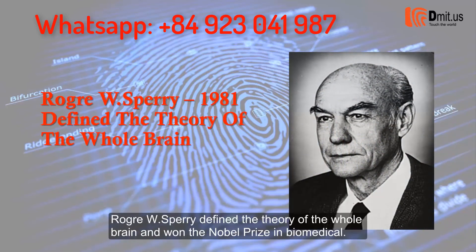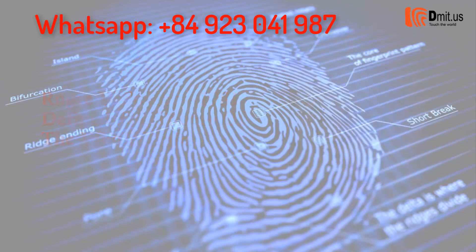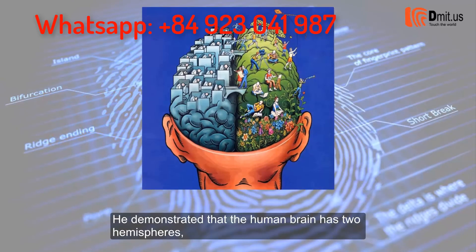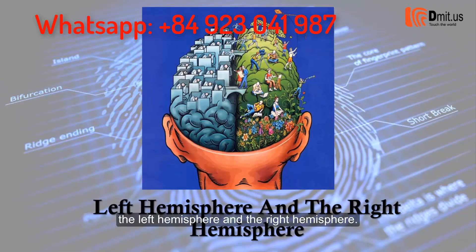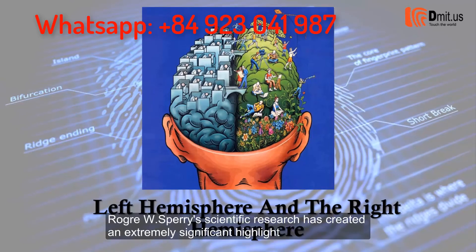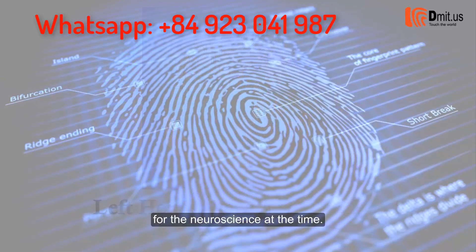Since 1981, Roger W. Sperry defined the theory of the whole brain and won the Nobel Prize in biomedicine. He demonstrated that the human brain has two hemispheres: the left hemisphere and the right hemisphere. Roger W. Sperry's scientific research created an extremely significant highlight for neuroscience at the time.